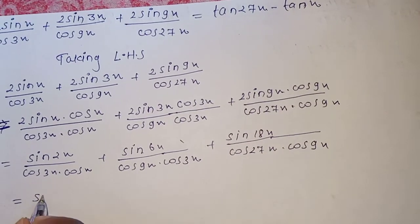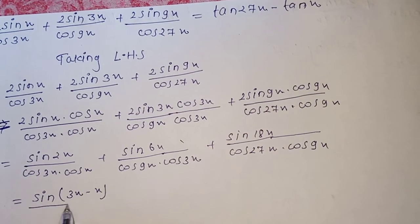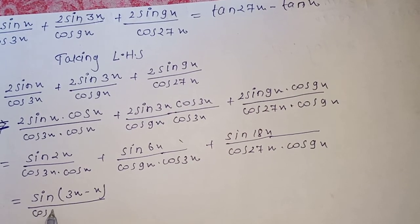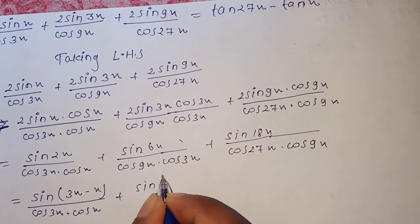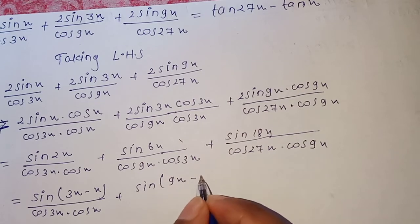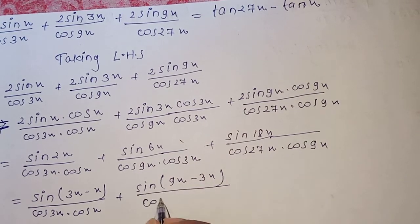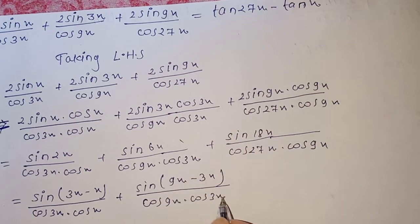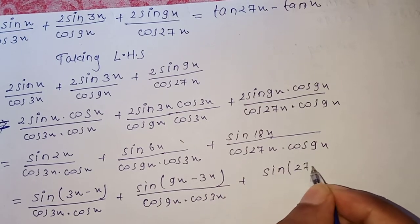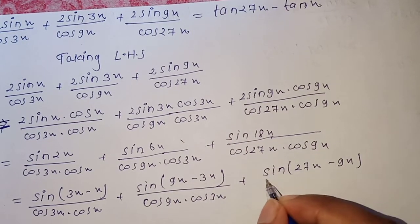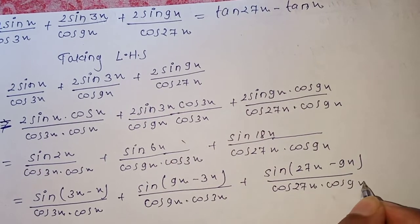Now rewriting using sin differences: sin(2x) = sin(3x - x), sin(6x) = sin(9x - 3x), sin(18x) = sin(27x - 9x). So we have: sin(3x - x) / (cos(3x)·cos(x)) + sin(9x - 3x) / (cos(9x)·cos(3x)) + sin(27x - 9x) / (cos(27x)·cos(9x)).